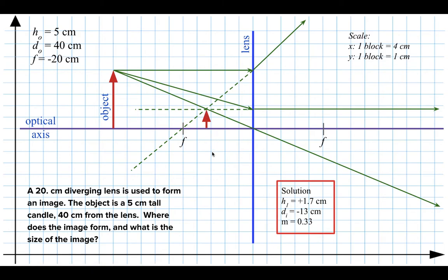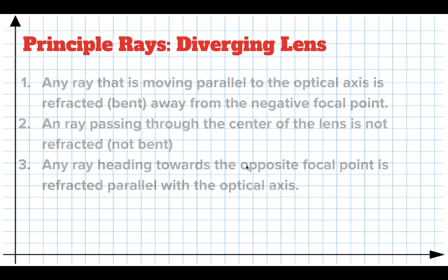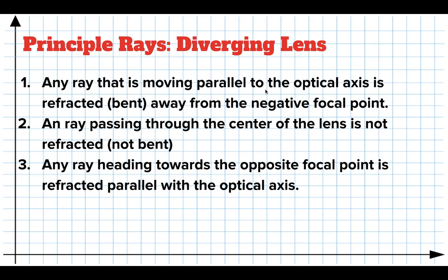That's how we solve a diverging lens problem. The three principal rays are: the one parallel to the axis is bent away from the focal point; the one heading towards the opposite focal point is bent parallel to the optical axis; and the one through the center continues unrefracted. We then trace those three rays back to find the apparent point of origin.